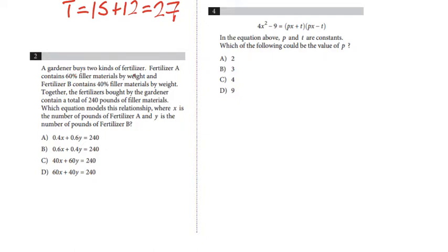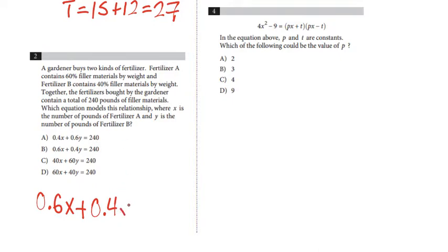Number 2: a gardener buys two kinds of fertilizer. Fertilizer A contains 60% filler materials by weight, and fertilizer B contains 40% filler materials by weight. Together, the fertilizers contain a total of 240 pounds of filler material. The equation is 0.6 times x plus 0.4 times y equals 240, where x is pounds of fertilizer A and y is pounds of fertilizer B. This is answer choice B.